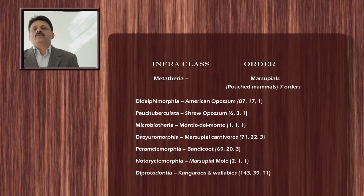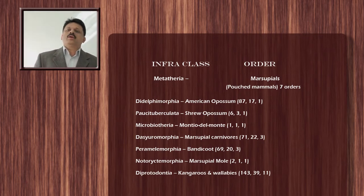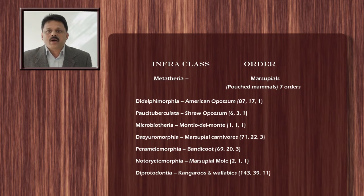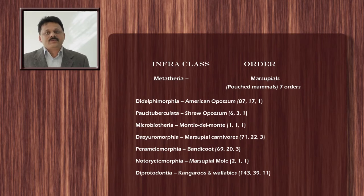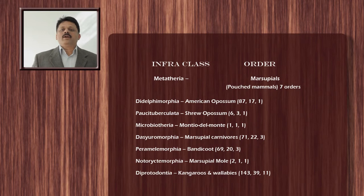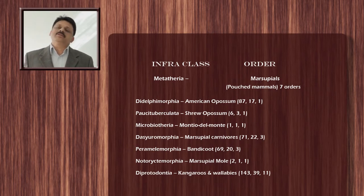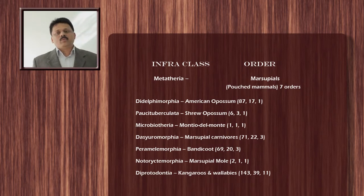The next infra-class is Metatheria, which includes the marsupials, also called pouched mammals. In the past, marsupials were grouped under a single order, Marsupialia. However, as per the recent classification, marsupials are treated under seven different orders. The first is order Didelphimorphia, which includes opossums. Altogether there are 87 species of opossums in 70 genera under one family.